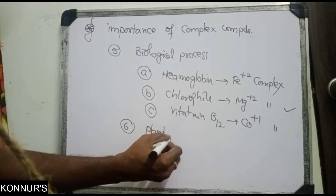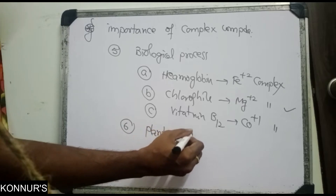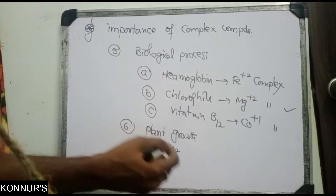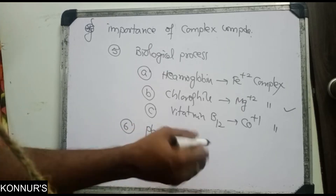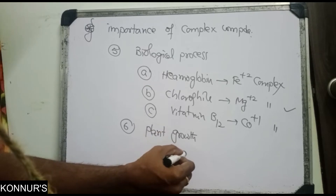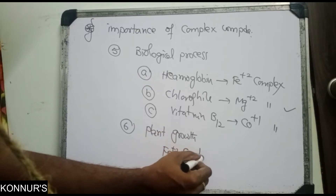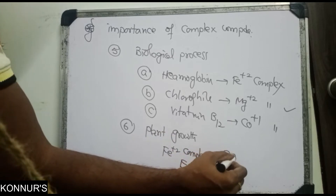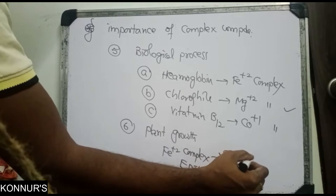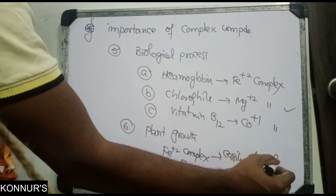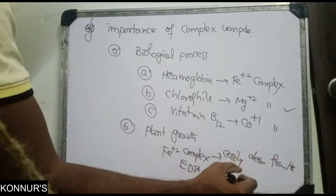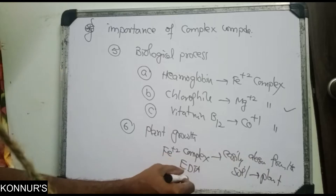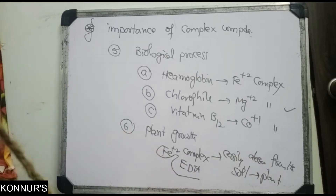In plant growth, iron in inorganic combination is not easily absorbed. When Fe2+ forms a complex with EDTA, it is easily absorbed from the soil — first by the soil, then by the plant. So EDTA complex form of Fe2+ helps in plant nutrition.